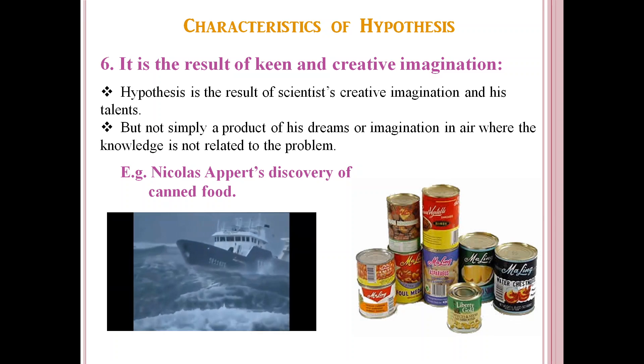He conducted an experiment to test this hypothesis and found that the food did not get spoiled, as the germs in the food were killed by boiling and the outside germs could not enter the food as the glass jar was sealed with a cork. So, this hypothesis was the result of Nicholas's keen and creative imagination which led to the invention of canned food. In this part of hypothesis, we have studied the meaning of hypothesis, its definition and six characteristics. Thank you.